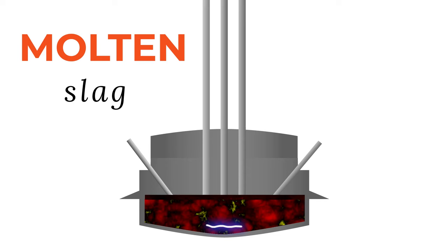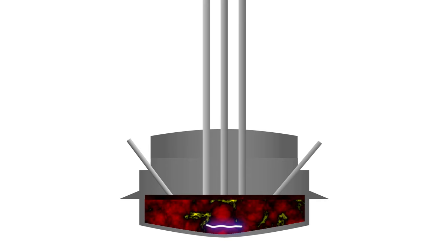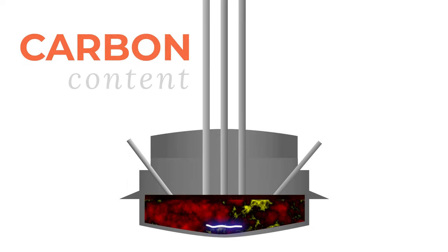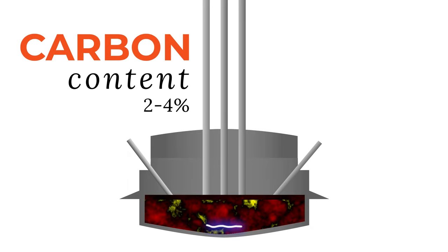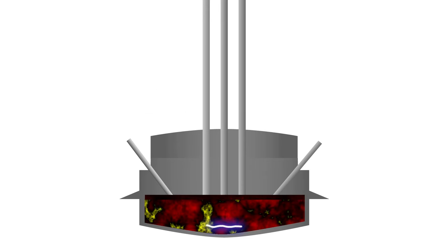The combination of scrap and direct reduced iron, derived from coal or natural gas reduction, usually provides a carbon content in the melt of 2-4%. Carbon, therefore, also has to be removed. This is done during oxygen injection by forming carbon dioxide, again similar to basic oxygen steelmaking.